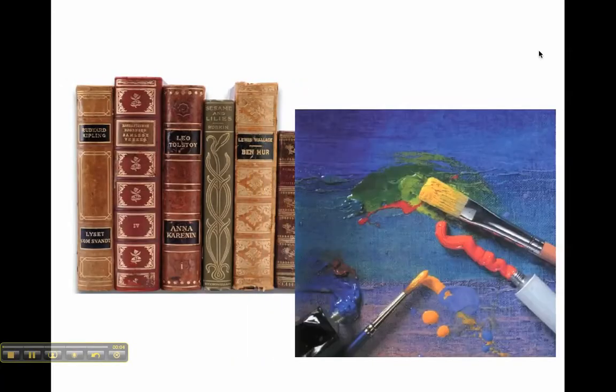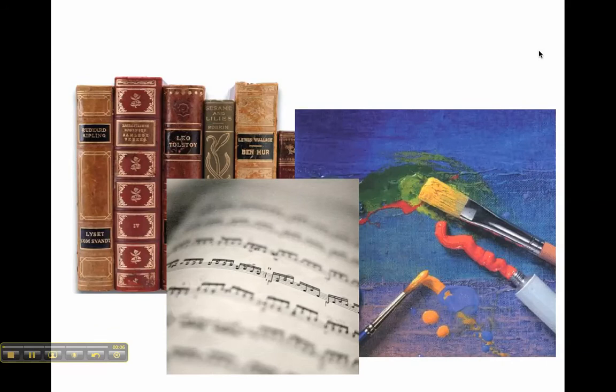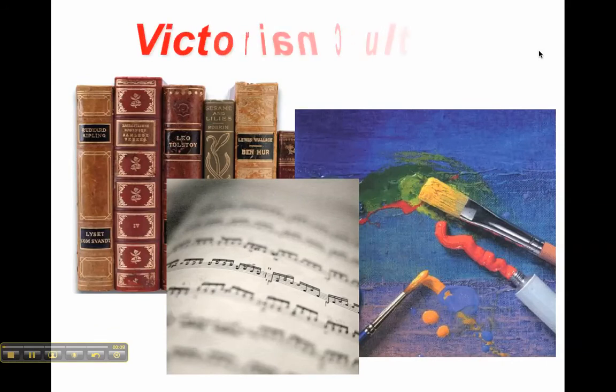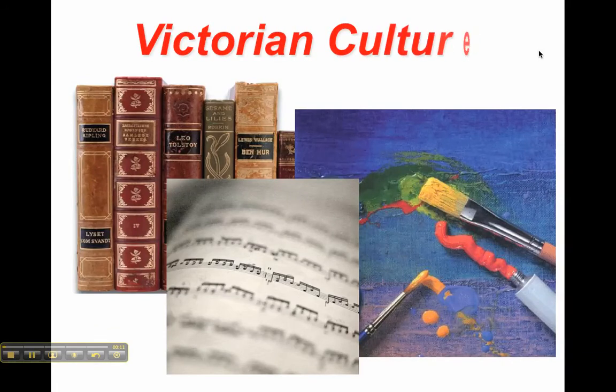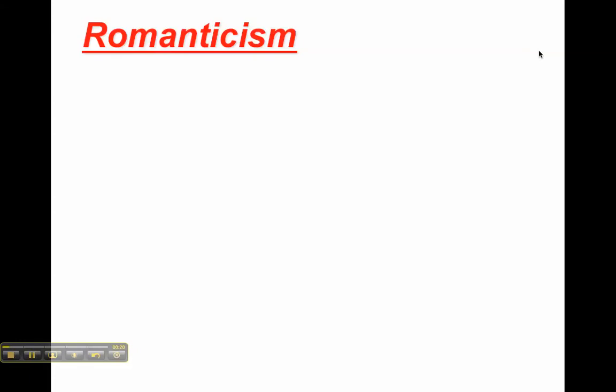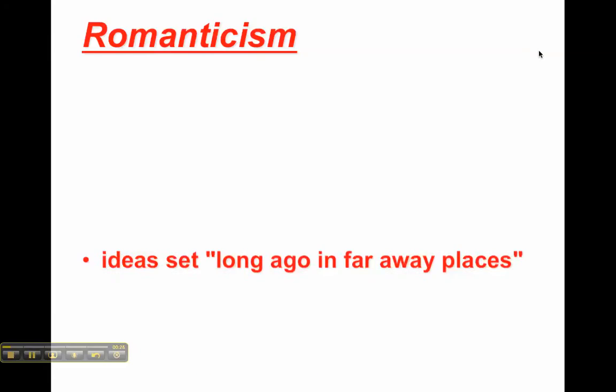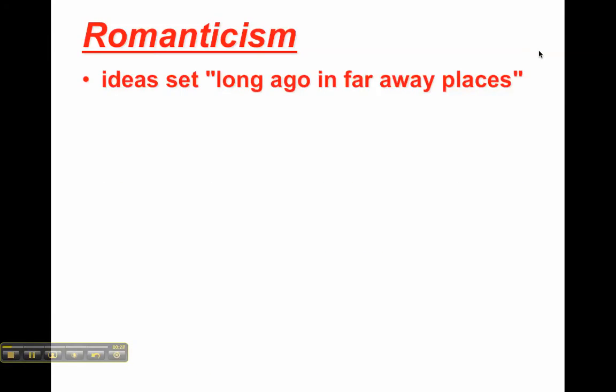As we look at literature, art, and music that was popular in the 1800s, we can learn about the impact the Industrial Revolution had on society. But before we look at the changes in art that take place as a result of the Industrial Revolution, let's first consider what was popular as the Industrial Revolution was getting going — and that would be an artistic movement called Romanticism.